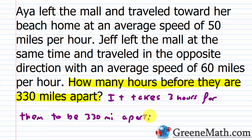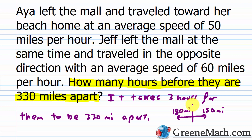You can verify: if Aya drives at 50 miles per hour for three hours, she travels 150 miles. Jeff drives in the opposite direction at 60 miles per hour for three hours, covering 180 miles. The total distance between them is 150 + 180 = 330 miles, which confirms our answer.